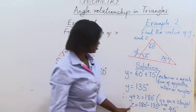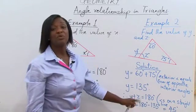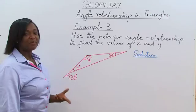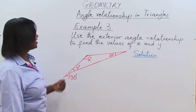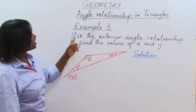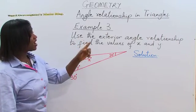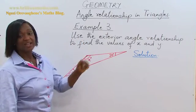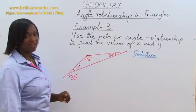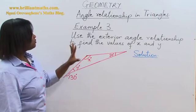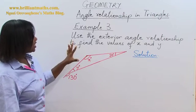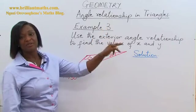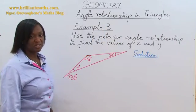So angle Z is equal to 45 degrees. Example 3: use the exterior angle relationship to find the values of X and Y. Specifically, we have been asked to use the exterior angle relationship.